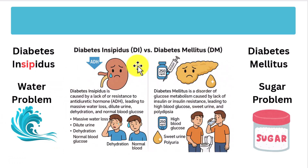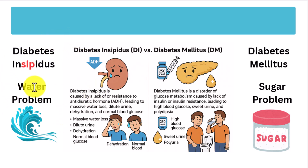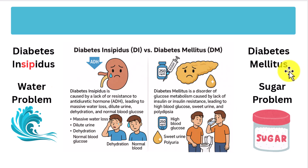Remember: diabetes insipidus is a water problem. Remember the 'sip' in diabetes insipidus — sip, sip, sip — you sip water. This is how you can tell it apart from diabetes mellitus, which is a sugar problem. Diabetes insipidus is a water problem; diabetes mellitus is a sugar problem.